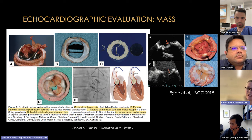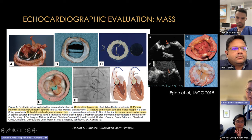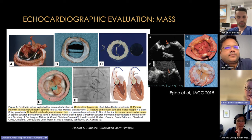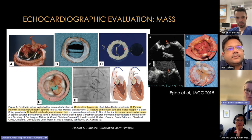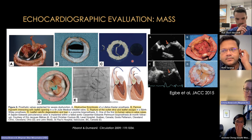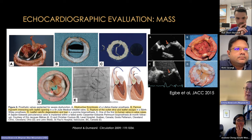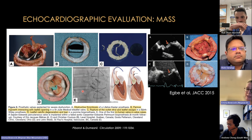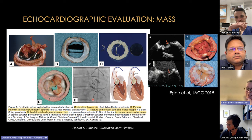Masses on a prosthetic valve are most commonly thrombus, vegetation, or pannus. Obstructive thrombus appears as thickened, softer, less echogenic material; pannus tends to be brighter and more echogenic, typically on the edges. The two can coexist. Pannus is more common on aortic valves, thrombus more common on mitral valves. Other rare findings include ruptured leaflets. Complex cases now include valve-in-valve procedures — bioprosthetic valves receiving a TAVI within them.